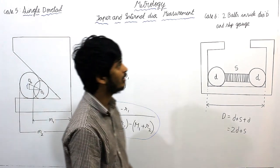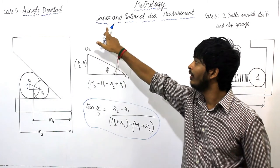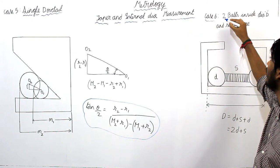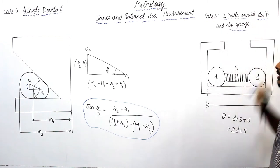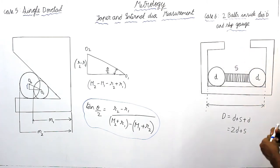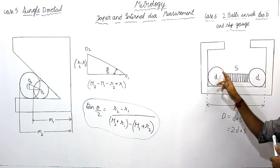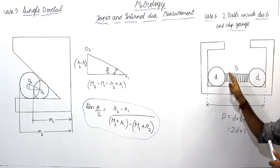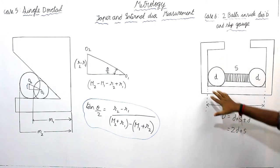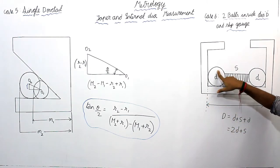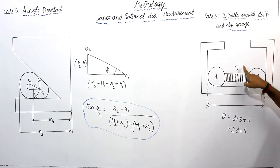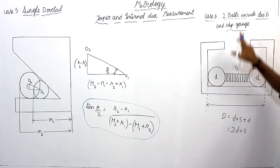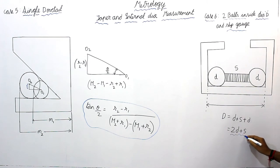Case 6 onwards involves finding internal diameter. From case 6 we find internal diameter measurement. Case 6: find the internal diameter of a component using two rollers of the same small diameter d and slip gauges. Capital D is the internal diameter of the component, small d is the diameter of each roller, and S is the length of the slip gauge. The formula is: D = 2d + S.